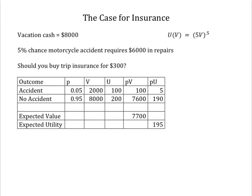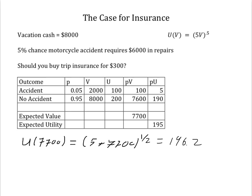Buying insurance for $300 allows you to avoid the lottery — you'd have $7,700 with certainty. The utility of $7,700 with certainty is equal to the square root of 5 times $7,700, which is 196.2. Since this is greater than 195, yes, you'd want to buy this insurance policy for $300.